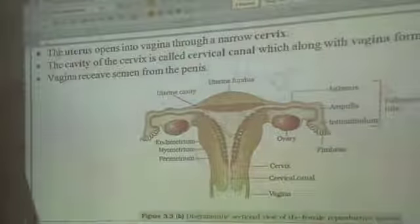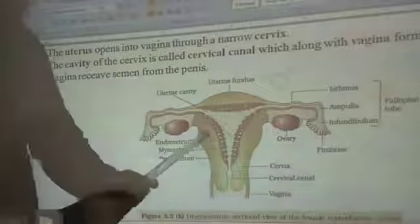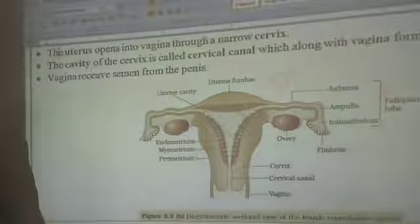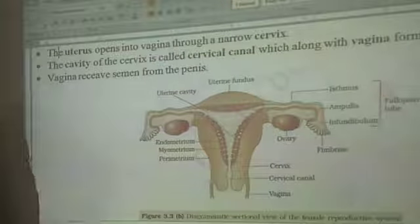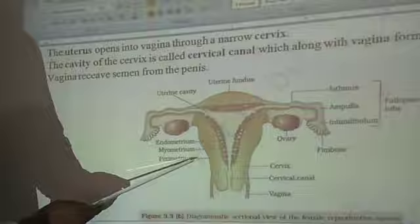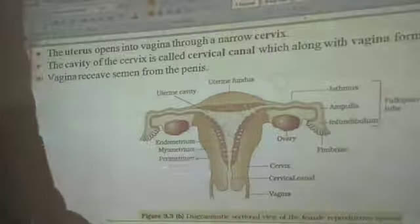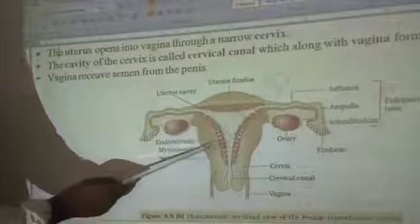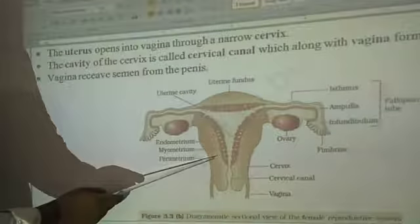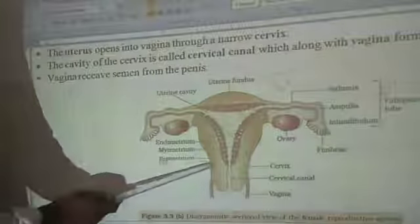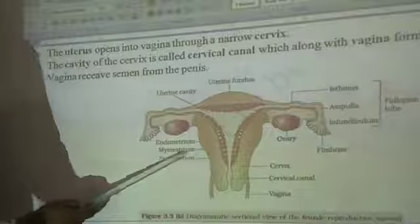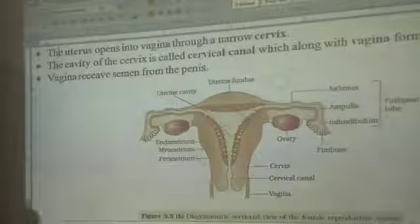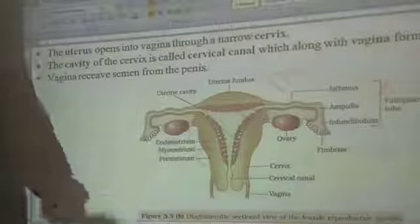Next, we have to discuss about the uterus. The uterus is a pear-like structure mainly used for the development of the fetus. The wall of the uterus contains three layers of tissues: the outer perimetrium, the middle myometrium, and the inner endometrium.